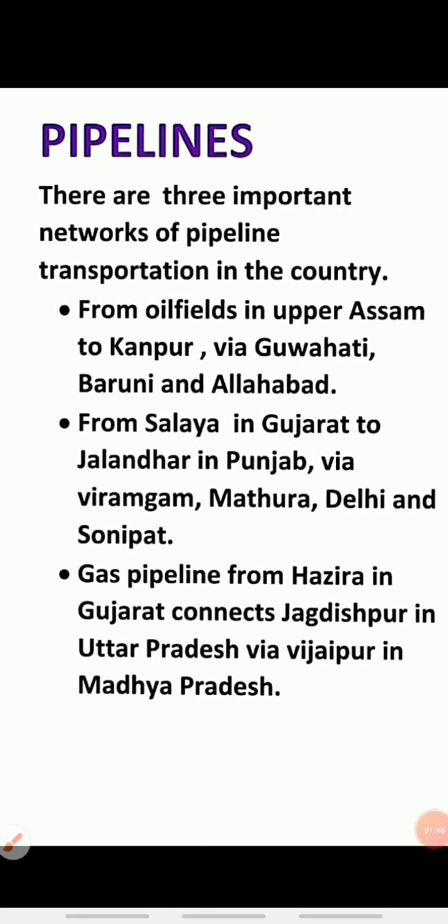The second network is from Salaya in Gujarat to Jalandhar in Punjab, via Viramgaon, Mathura, Delhi and Sonipat. It has branches to connect Goyali near Vadodara, Gujarat, Chakshu and other places.